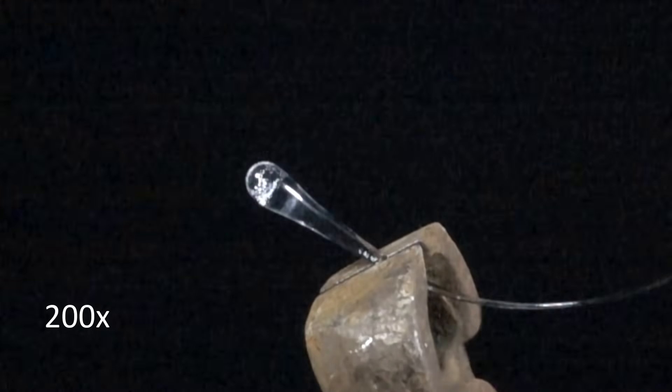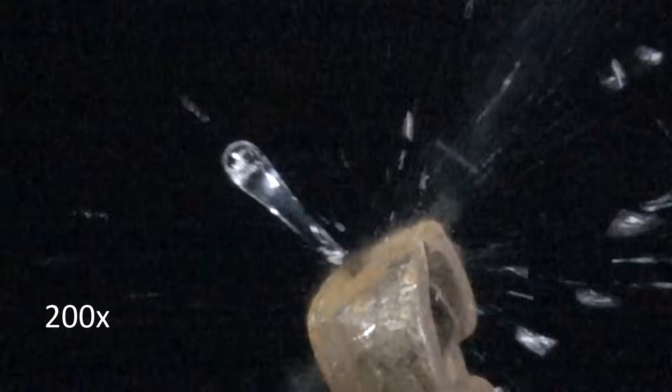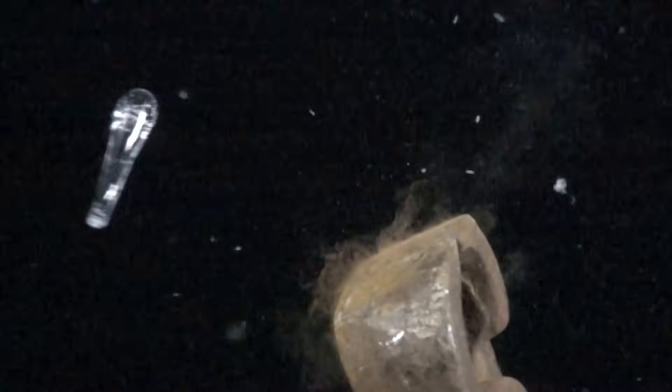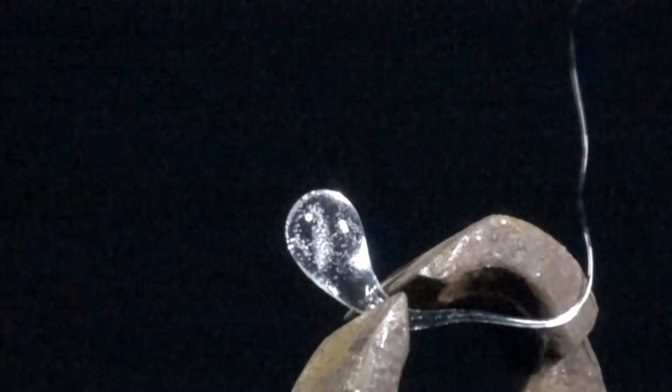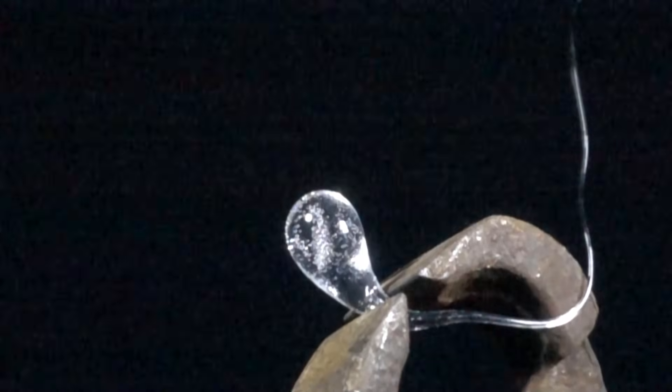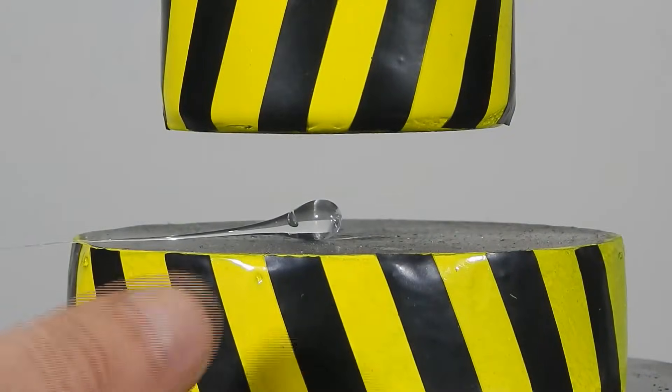And this is what happens to the Rupert's failed drop. When the tail breaks off, the whole thing just shatters. The resulting drop, when the tail is broken off, crumbles into small shards. Well, let's start our test.